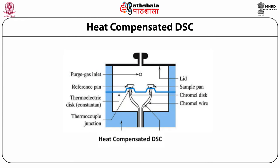Therefore, the total heat flow is equal to the sum of two terms: one related to kinetic response and the other related to heat capacity. In the basic instrumentation diagram of heat flux DSC, the reference pan and sample pan are in the same chamber — the left one is the reference pan and the right one is the sample pan. There is a purge gas inlet, a thermoelectric disc made of constantan, and a chromel disc. Chromel wires are connected to form thermocouple junctions at the end points of the reference pan and the sample pan.